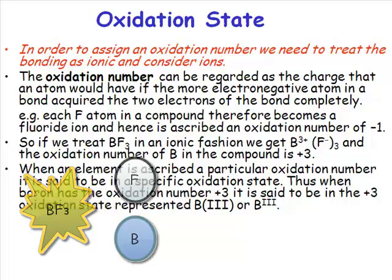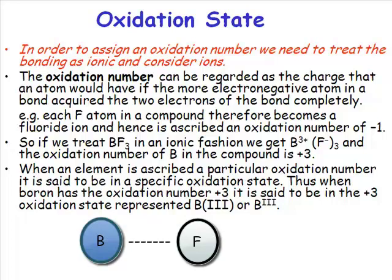Well, what you have to do is you have to look at the boron-fluorine bonds. What you have to do is decide which is the most electronegative element. And in the case of a fluorine containing compound, that ought to be very easy. It is the fluorine that is the most electronegative element.